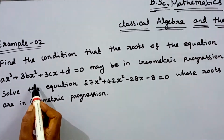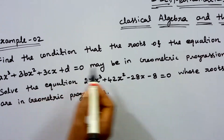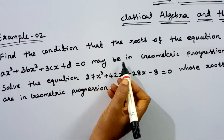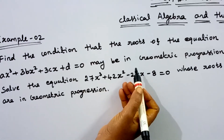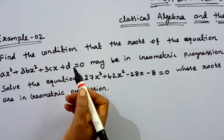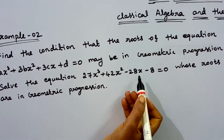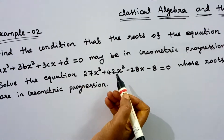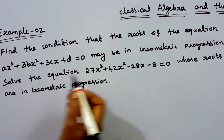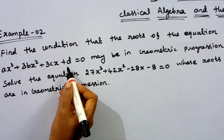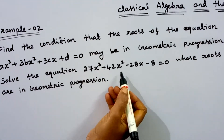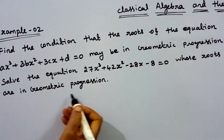We have a cubic equation with roots in geometric progression and we need to find a condition. In the previous video we handled arithmetic progression. Here, for this cubic equation we need to calculate the roots that are in geometric progression.